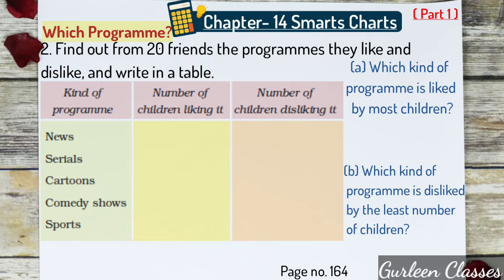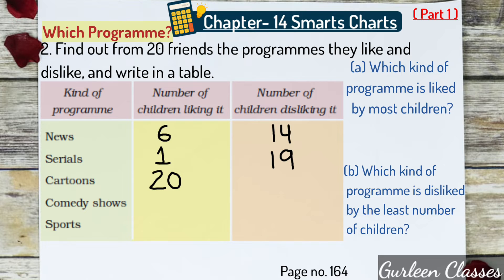Question number 2 from page number 164: Find out from 20 friends the programs they like and dislike and write in a table. From my survey of 20 friends: news — 6 children liked it, 14 disliked it; serials — 1 liked it, 19 disliked it; cartoons — 20 liked it, 0 disliked it, as most students like watching cartoons.